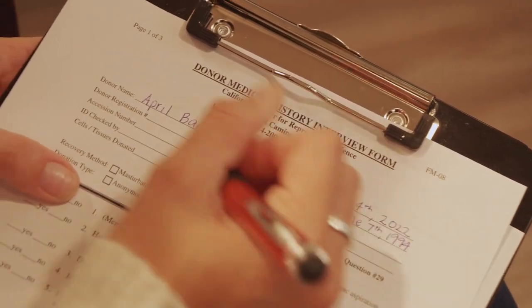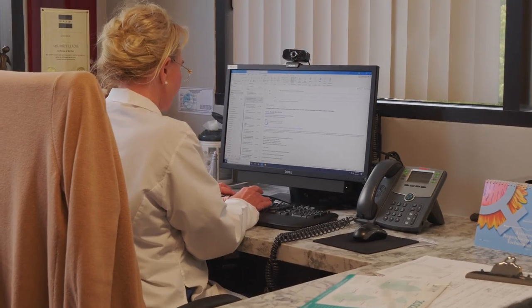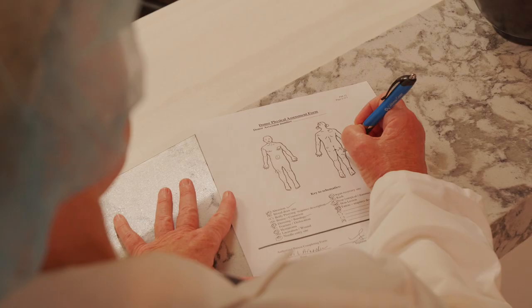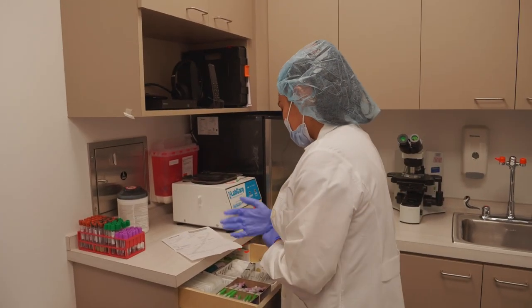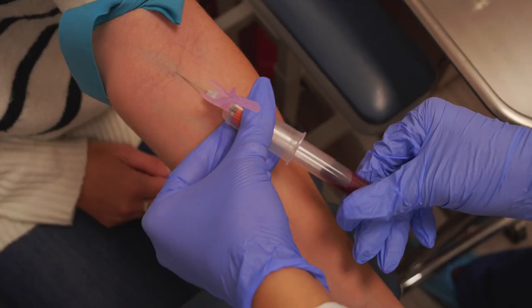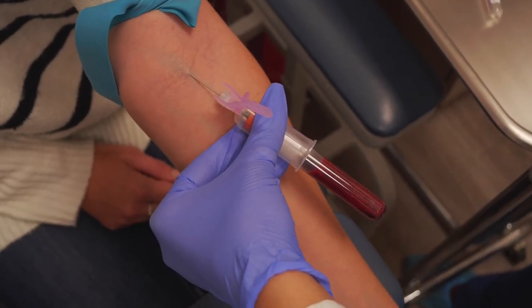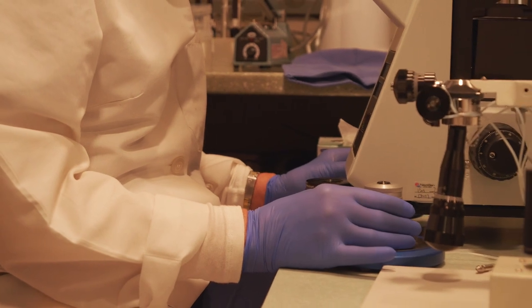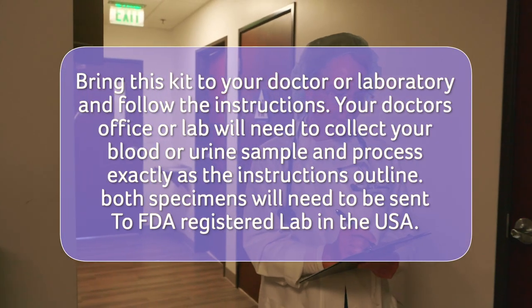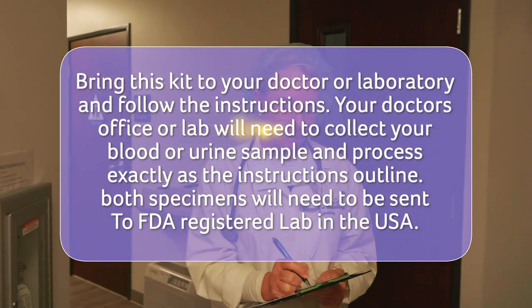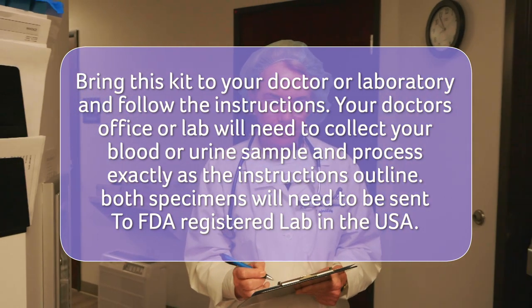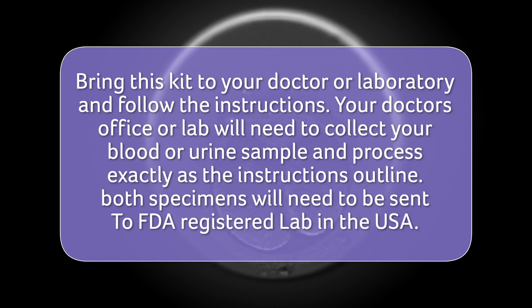For the donor physical assessment, you will need to schedule an appointment with your primary physician to perform the FDA physical. The FM-12 form needs to be completed by your local physician. Please have them sign the form once your visit is complete. Also required is the infectious disease testing — blood and urine testing through an FDA registered laboratory in the USA. The FDA registered laboratory will ship a kit to your home. Bring this kit to your doctor or laboratory and follow the instructions. Your doctor's office or laboratory will need to collect your blood and urine sample and process exactly as the instructions outline. Both specimens will need to be sent to the FDA registered lab in the USA.